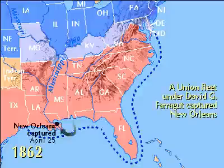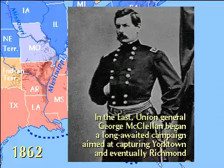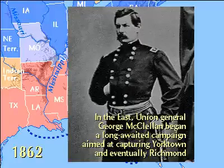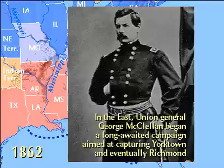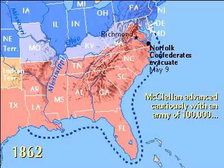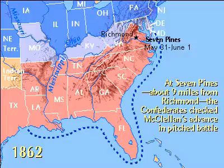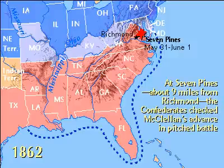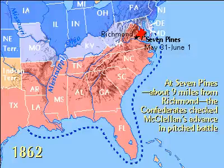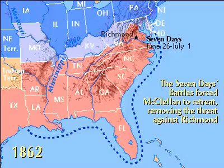To the South, a Union fleet under David C. Farragut captured New Orleans. In the East, Union General George McClellan began a campaign to capture Yorktown and the Confederate capital of Richmond, advancing cautiously with an army of 100,000. At Seven Pines, about nine miles from Richmond, Southern troops under Joseph Johnston stopped McClellan, but the battle severely wounded Johnston, and command passed to Robert E. Lee. Lee outflanked the Union in the Seven Days' battles, forcing McClellan to retreat. The threat against Richmond was denied.